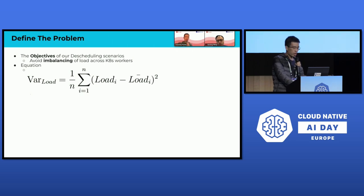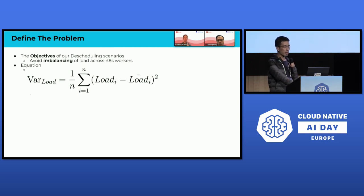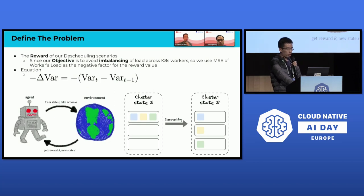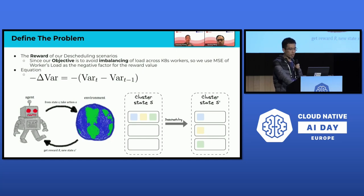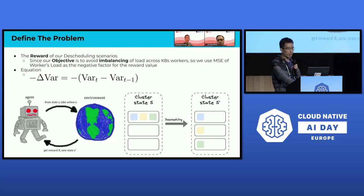The first step is problem definition. It's crucial to clearly understand the problems we are addressing, as this influences all our reward functions designed in later stages. In the context of Shopee, we identified our objective as achieving balance across the cluster. To measure workload imbalance across the cluster, we use the variance of the load. A higher variance indicates greater imbalance; the ideal variance is zero, signifying even load distribution. We use the changes in variance as the reward signal during training. If variance decreases after the agent's action, it receives a positive reward, guiding towards policies that enhance cluster balance.